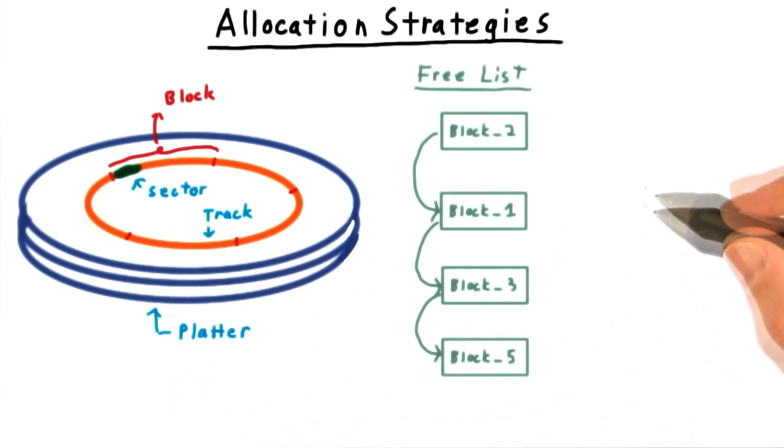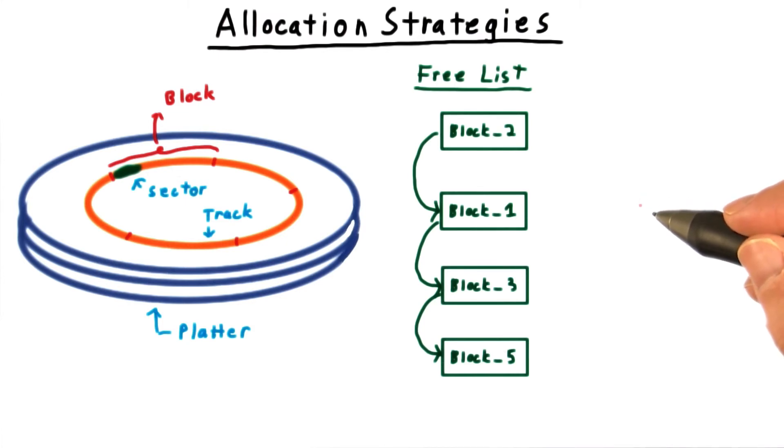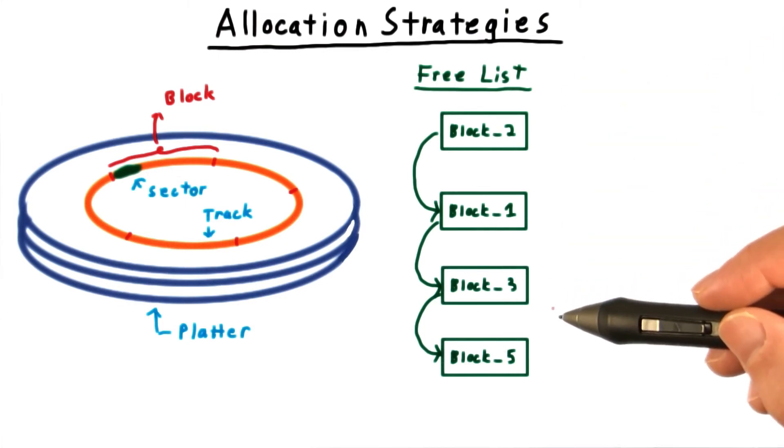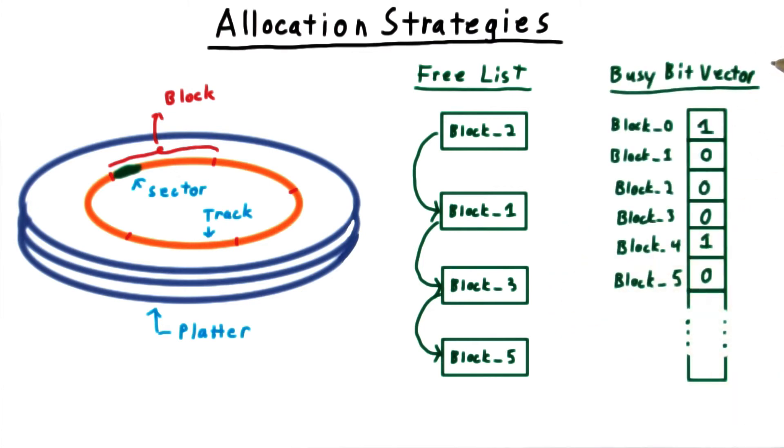All blocks are of the same size. There are several strategies for keeping track of which blocks are free and which are used. One easy way is to keep a list of free blocks. Another is to use a bit vector where each bit indicates whether a block is free or not. There are more complex strategies as well.